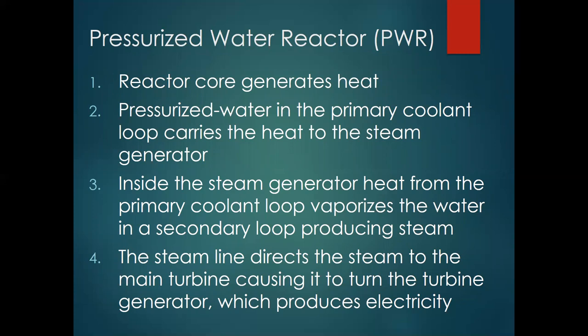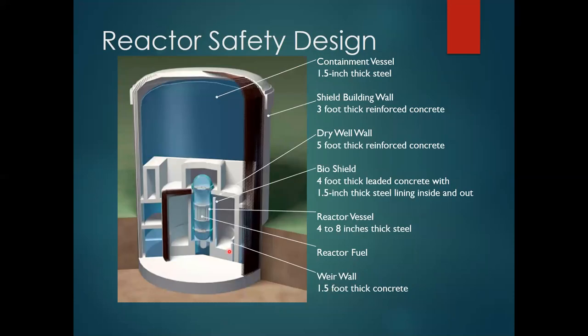This is just a list of what's going on in the pressurized water reactor. Here is our reactor safety design — don't memorize this. This shows the kinds of items wrapped around the nuclear rods to ensure neutron radiation never leaves the reactor. The materials are: concrete, steel, more steel, more concrete, concrete, and steel. Concrete and steel are very good at stopping neutron radiation and ensuring nuclear reactivity never gets outside the power plant.